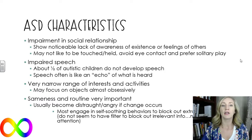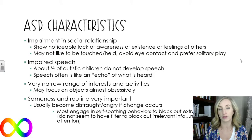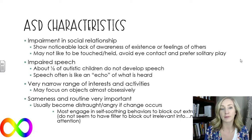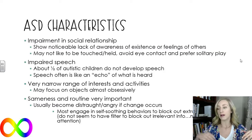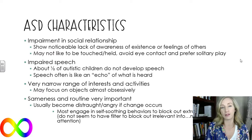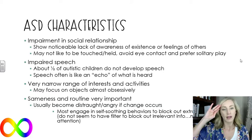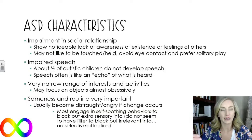Some characteristics of ASD: impairment in social relationships — they show a noticeable lack of awareness of the feelings of others, may not like to be touched or held, avoid eye contact, and prefer solitary play. About half of autistic children do not develop speech at all, and when speech is developed, it is often like an echo of what is heard — of what other people say, or of movies or shows they like. There is a very narrow range of interests and activities, and they get fixated and may focus on objects almost obsessively. And there is sameness and routine — very, very important — usually becoming distraught and angry if change occurs.